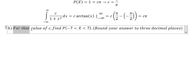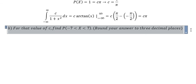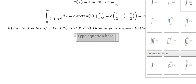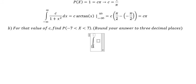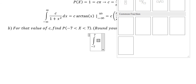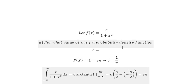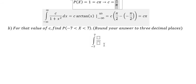Question number two: for that value of c, find the probability from negative seven to positive seven. For this one, we just set up the integral from negative seven to positive seven. We substitute c equals one over π.